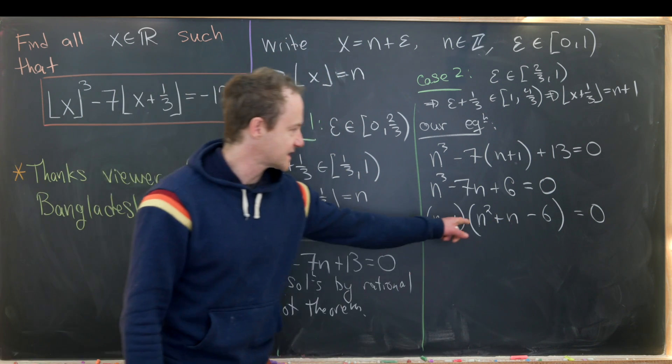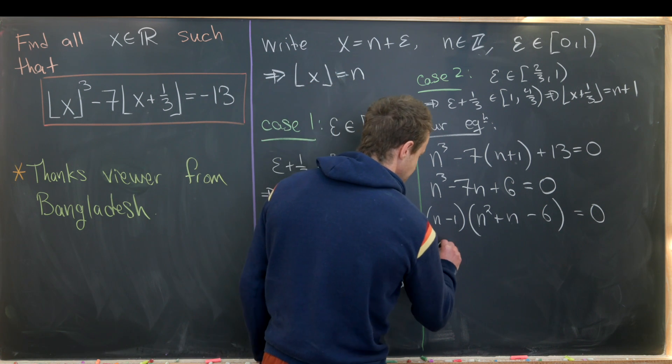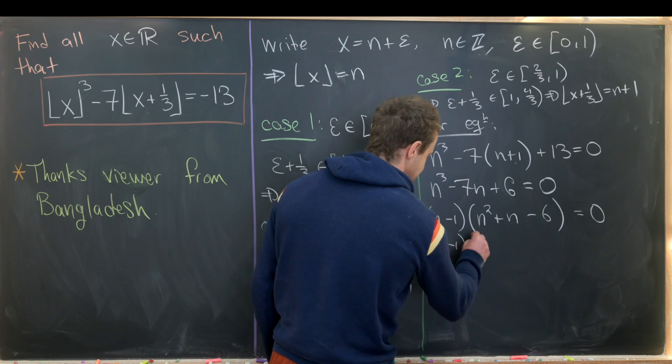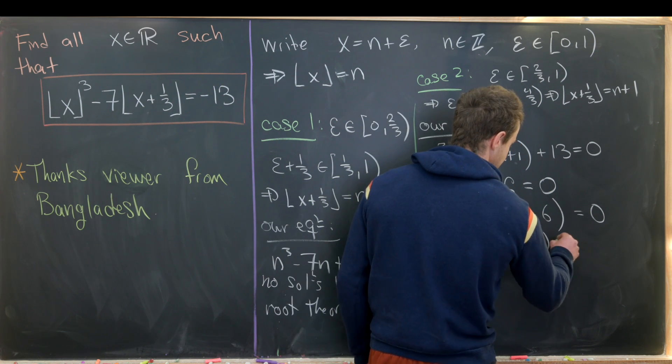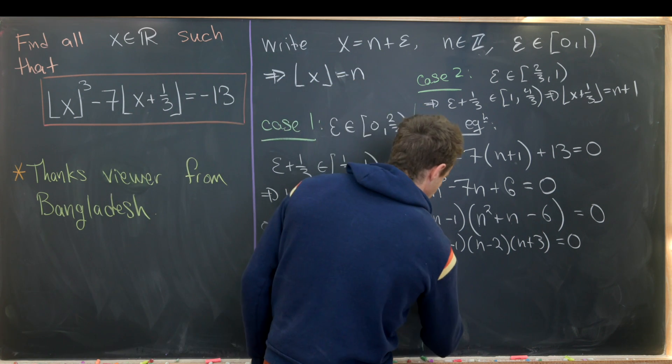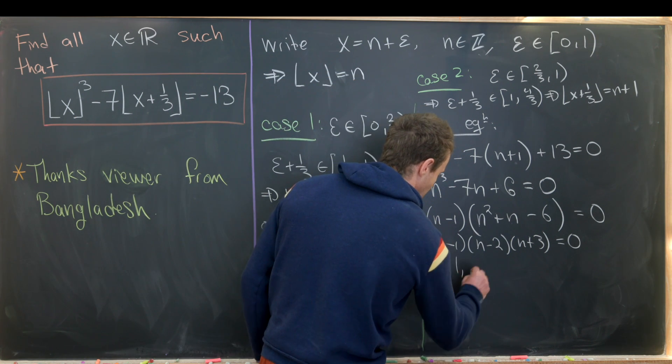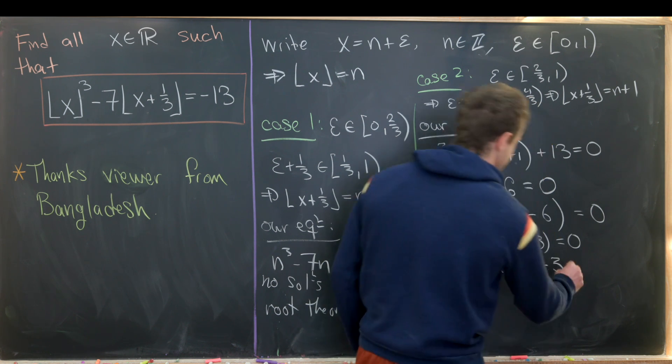But now this guy further factors to n plus 3 times n minus 2. So in the end, I can write this as n minus 1 times n minus 2 times n plus 3 equals 0. But that means that we have solutions n equals 1, n equals 2, and n equals negative 3.